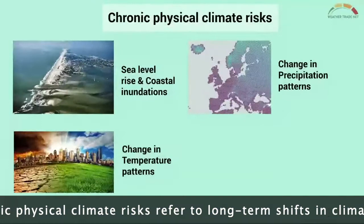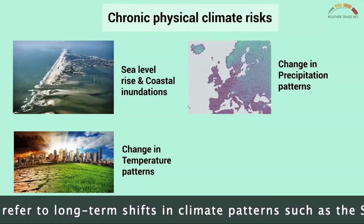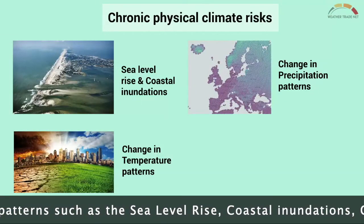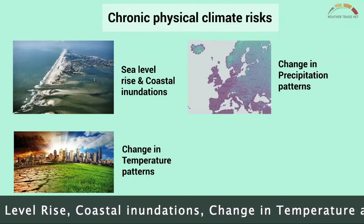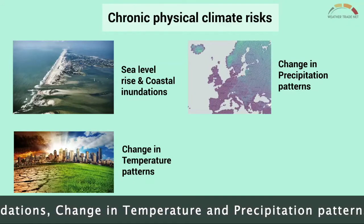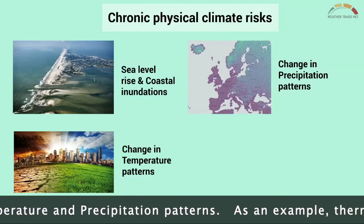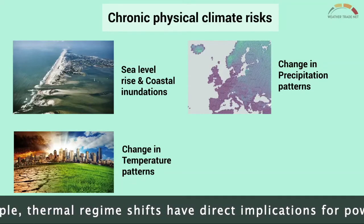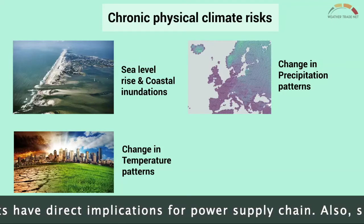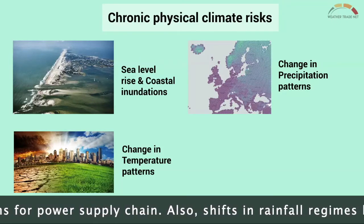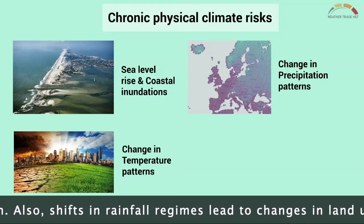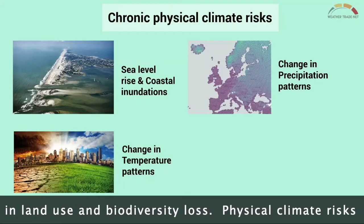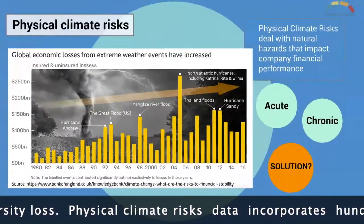Chronic physical climate risks refer to long-term shifts in climate patterns such as sea level rise, coastal inundation, change in temperature, and in precipitation patterns. As an example, thermal regime shifts have direct implications for the power supply chain. Also, shifts in rainfall regimes lead to changes in land use and biodiversity loss.